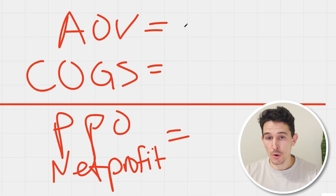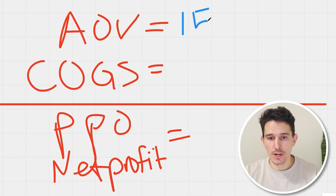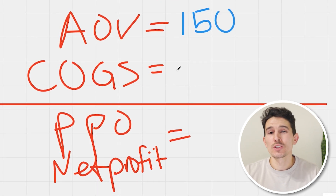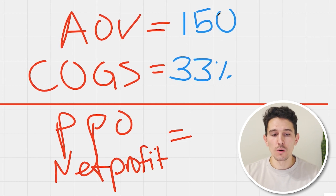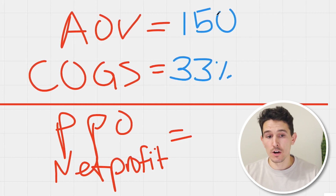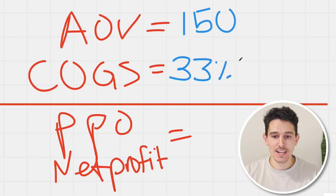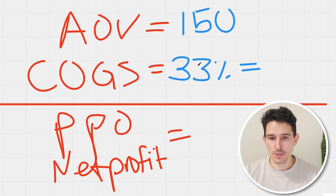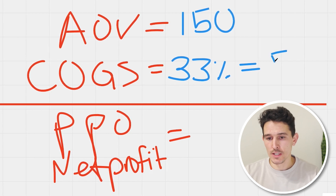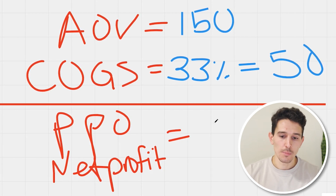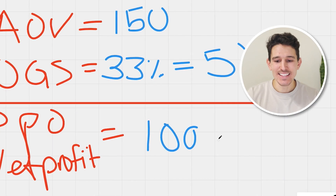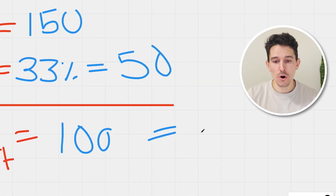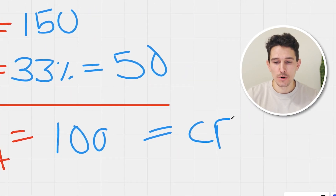Let's pretend your average order value is $150. Your cost of goods sold is 33%. So all we need to do to get our cost of goods sold as a number is take 150 times 33%, which is $50, which means our net profit is going to be $100. This is also equal to our cost per acquisition target.